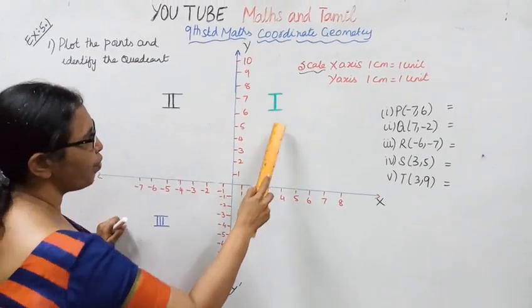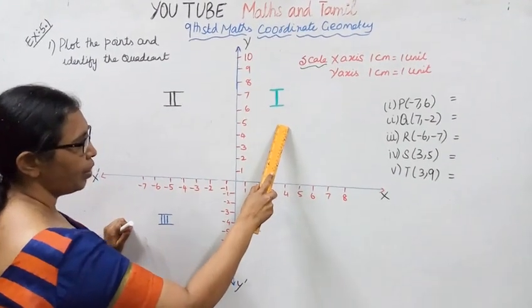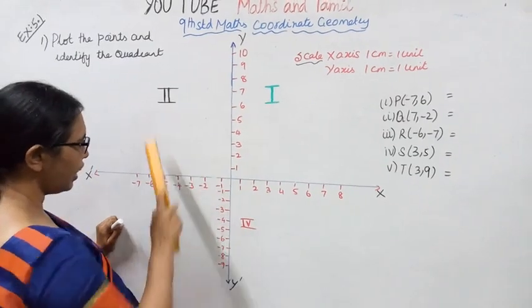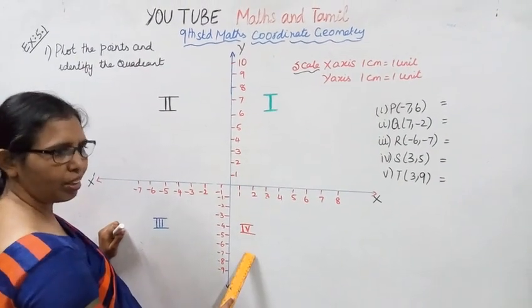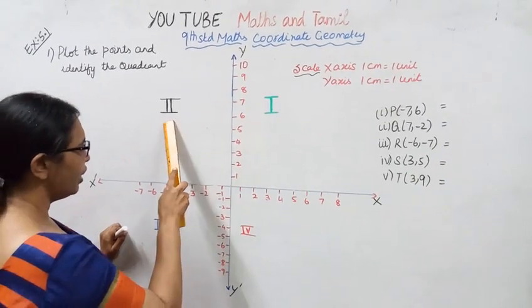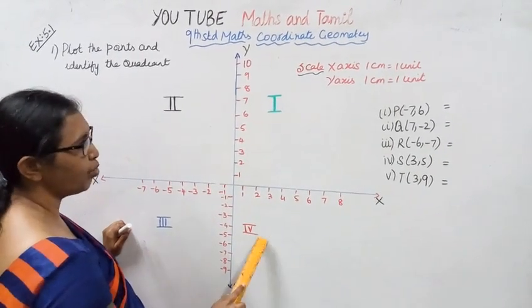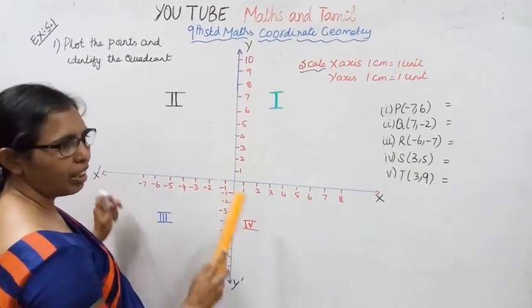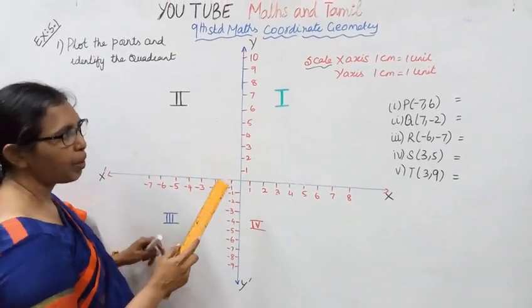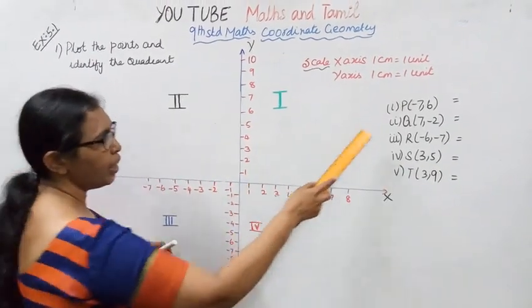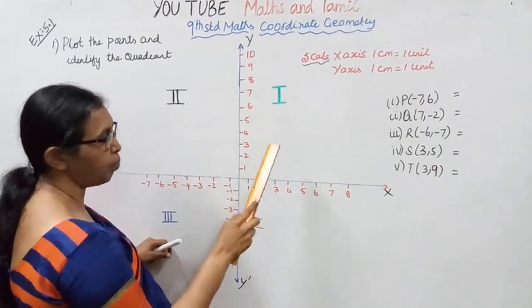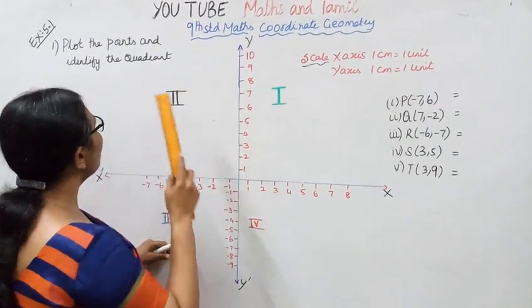In the first quadrant, second quadrant, third quadrant, and fourth quadrant — we will identify for all the points which quadrant they belong to.